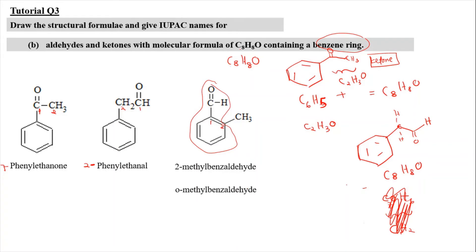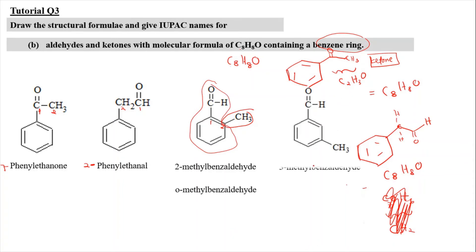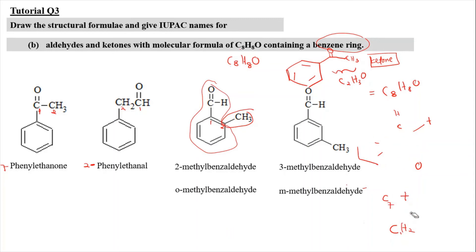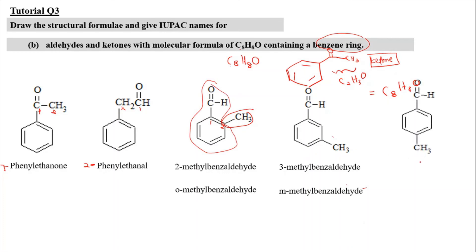We can also move the CH3 substituent to carbon 3 of the benzene ring, giving 3-methylbenzaldehyde, also known as meta-methylbenzaldehyde. Similarly, moving CH3 to carbon 4 gives 4-methylbenzaldehyde — numbered 1, 2, 3, 4 — also known as para-methylbenzaldehyde.